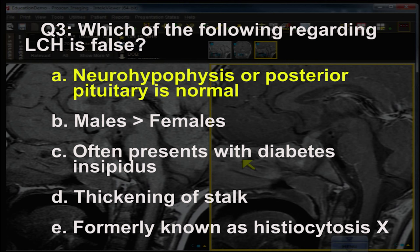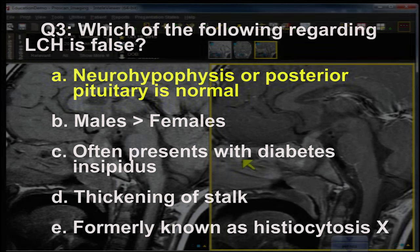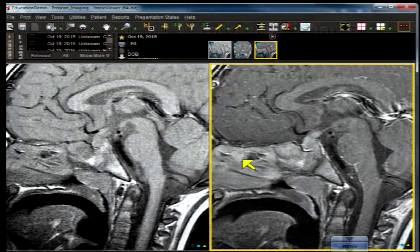Males are more commonly affected than females, so by process of elimination the correct answer is A. This concludes our discussion of LCH — Langerhans cell histiocytosis — with discussion of the pituitary stalk. Let's move on.